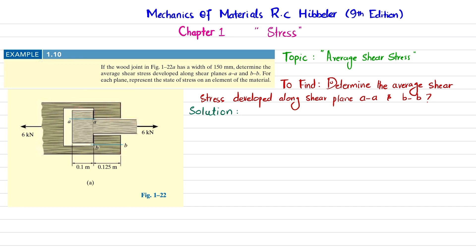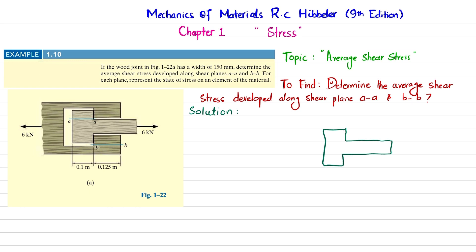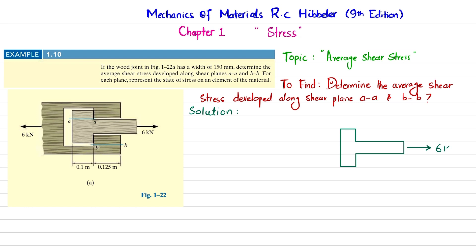Let's start with the solution. Due to this tensile load, the member will move in this direction. As a result, this member will exert force on these surfaces. If we draw the free body diagram, there is a 6 kilonewton load in this direction, and the force on each face will be F.